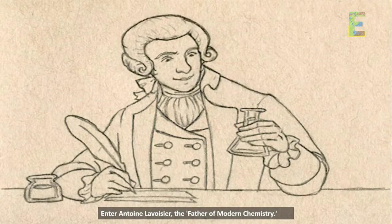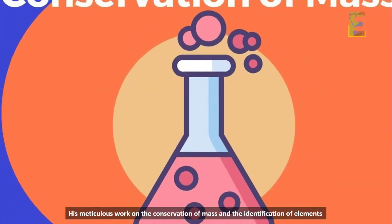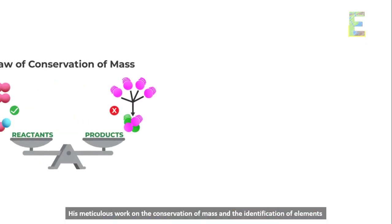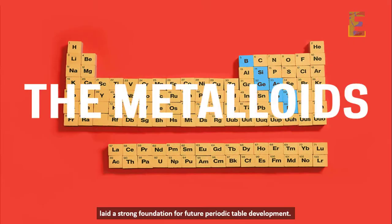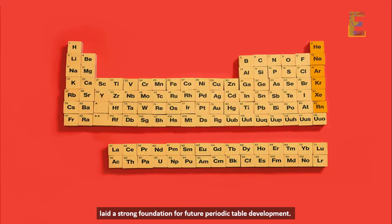Antoine Lavoisier. Enter Antoine Lavoisier, the father of modern chemistry. His meticulous work on the conservation of mass and the identification of elements laid a strong foundation for future periodic table development.